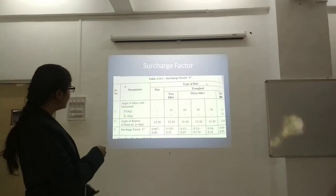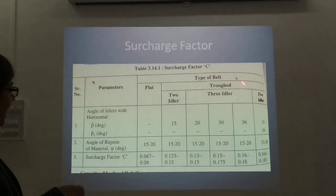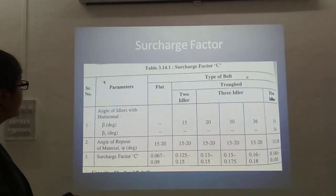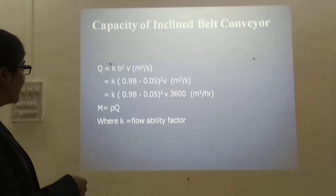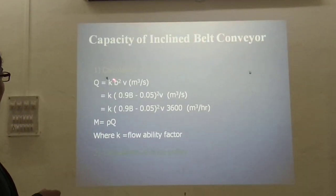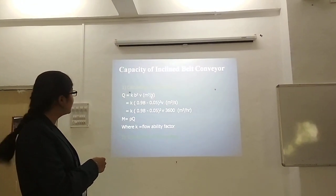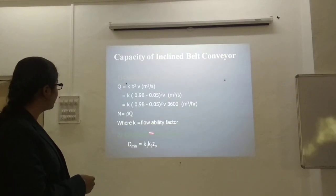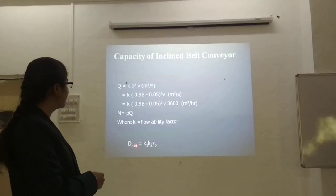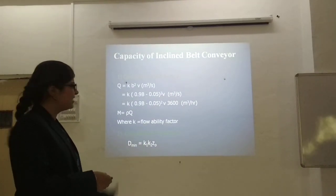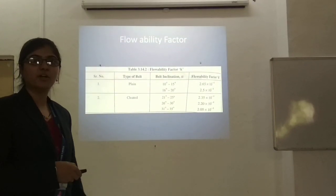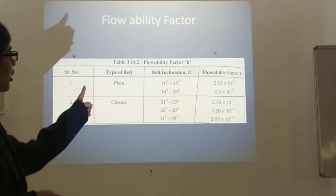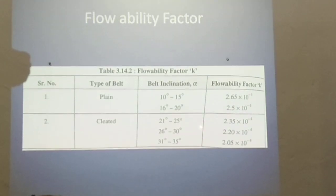If you want to select the surcharge factor, a standard table is given in the design data book from which we can select it. Next, how to calculate the diameter of the drive pulley — it is calculated by K1 × K2 × Z. For the inclined conveyor, instead of surcharge factor we use a flowability factor, which can be chosen according to the inclination of the belt conveyor system.